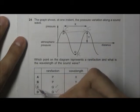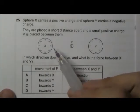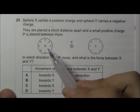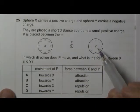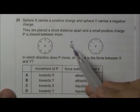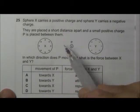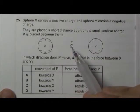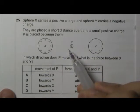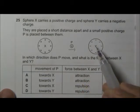Okay, in this question we have a positively charged sphere X and a negatively charged sphere Y with a very small positive charge P placed in between. Let's look at the interaction between X and P. They are both positively charged so P is going to be repelled away. So it's going to move in this direction.